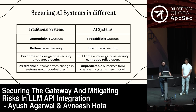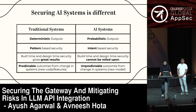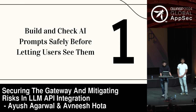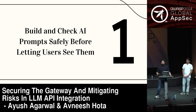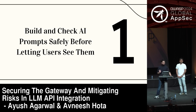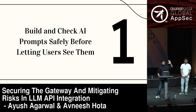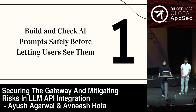We worked on this problem for the last few months, talked to our clients, and came up with three simple steps you can start using from tomorrow. Step one: build and check AI prompts safely before letting users see them. Whenever you get a prompt from a user, do not feed it directly into the LLM. Have a set of predefined templates — prepare prompts for the ten things your LLM needs to do. When you get user input, you're just selecting which template to use and what values to extract.